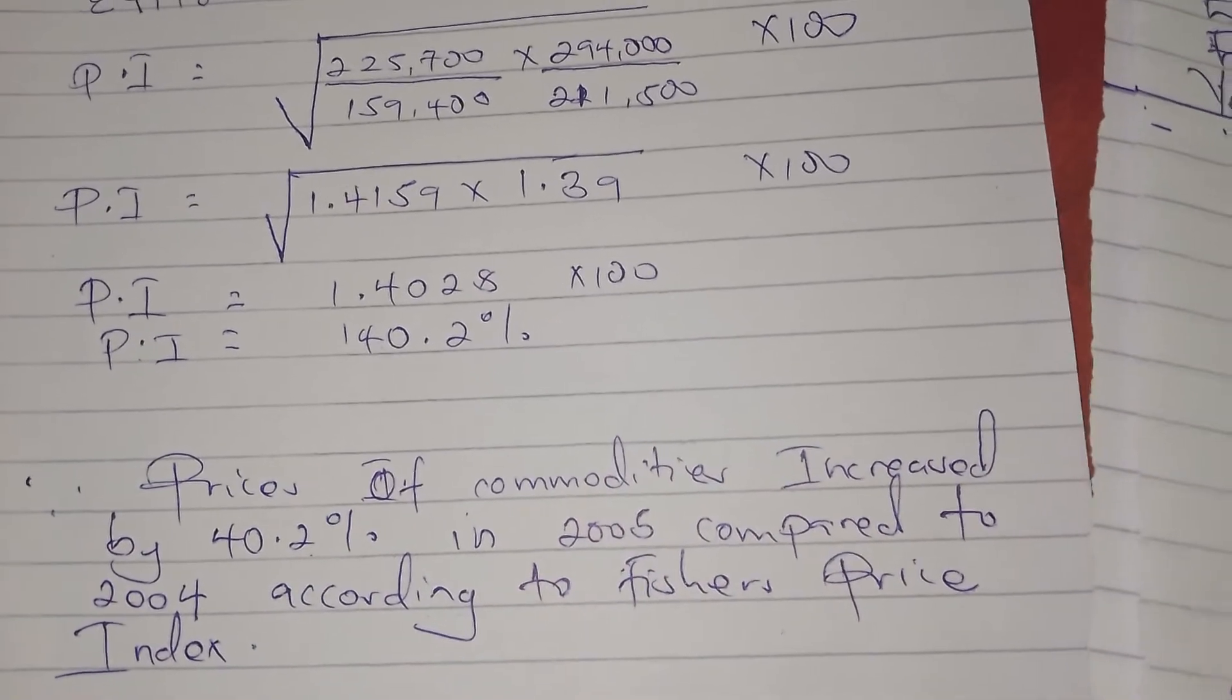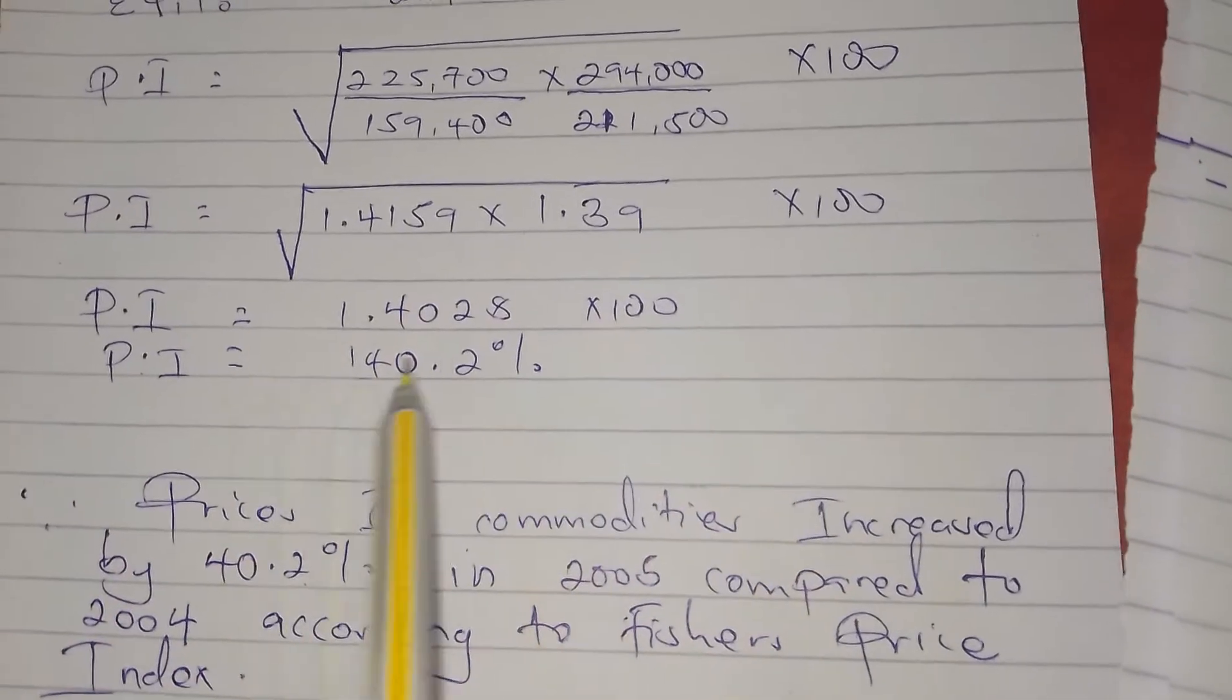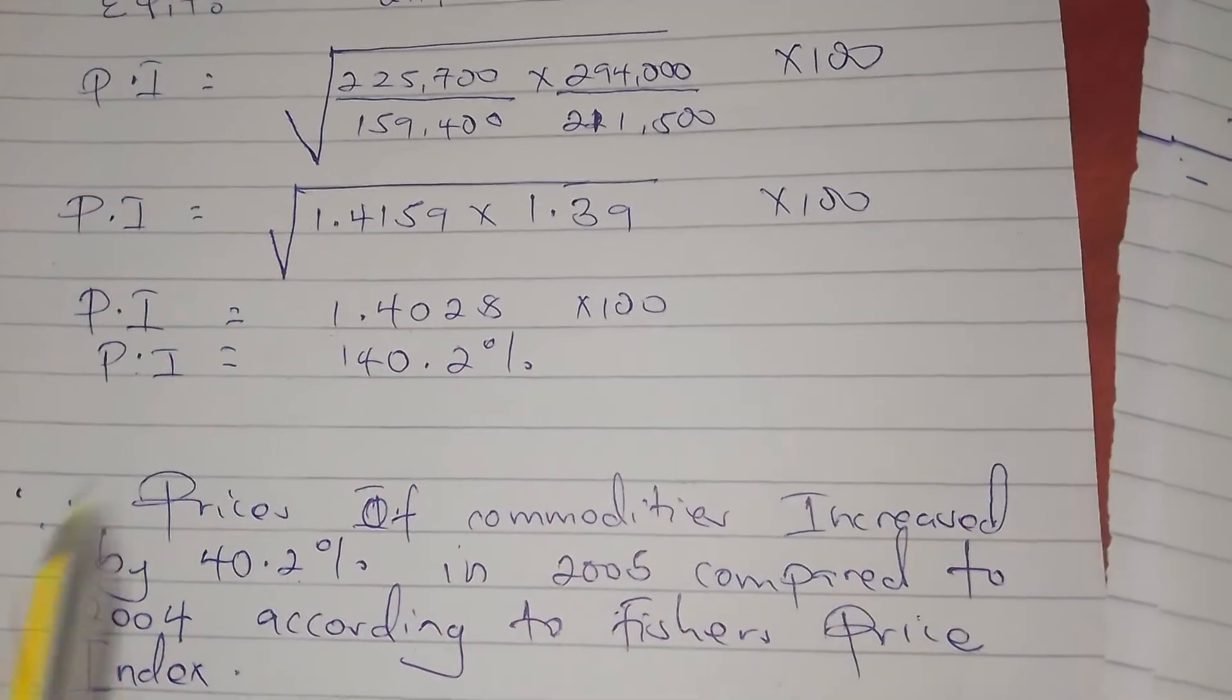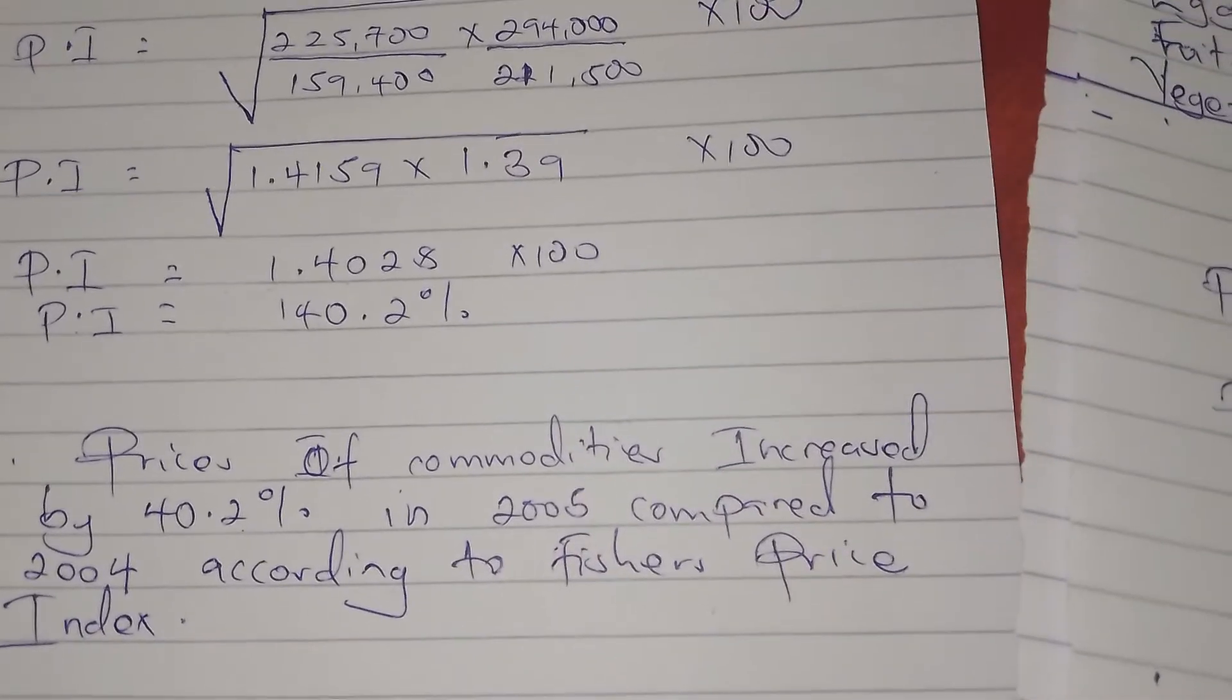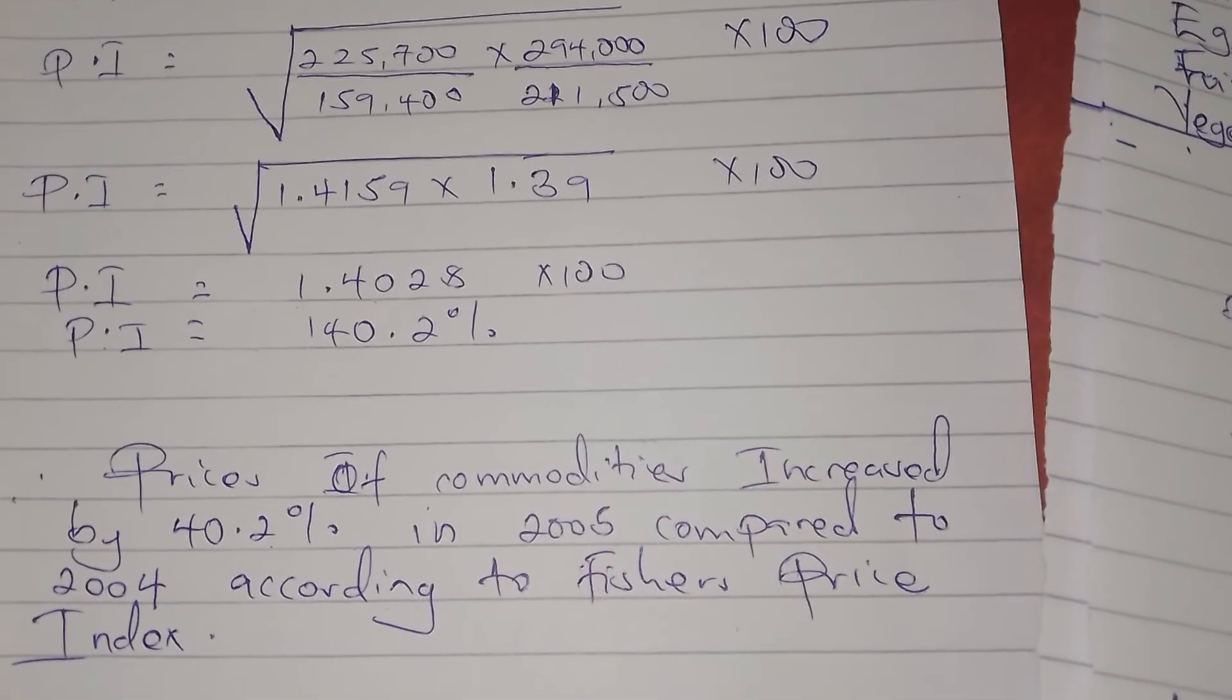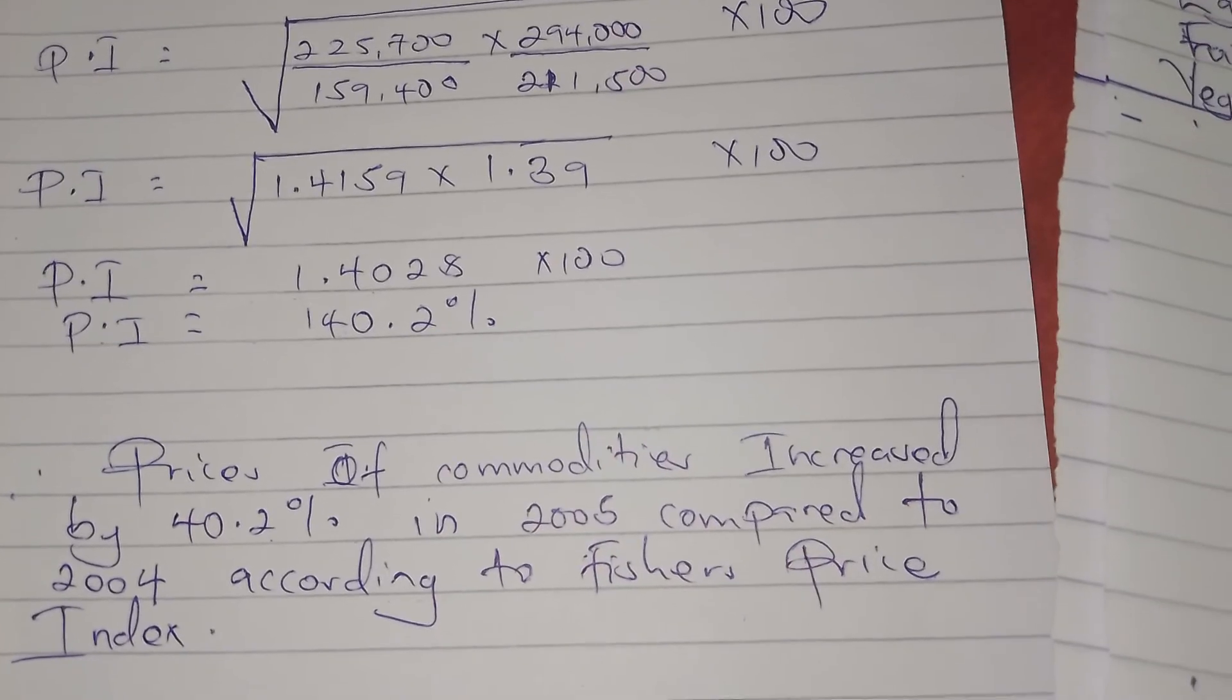So it reconciles the two, then we get the intermediate figure. This one is between 142 and 139. So that is Fisher's price index. Thanks for watching, don't forget to subscribe. This has been the end of the topic price index. I hope I have made a difference in your education.